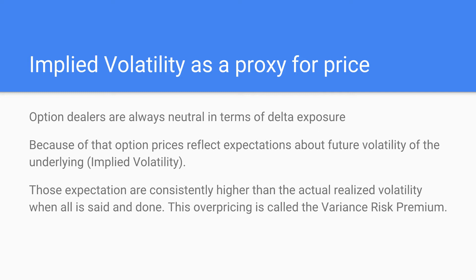Because the options are delta-neutral, the future price of the underlying is not what determines the price of an option. The determinant of the price of an option is the expectation of how volatile the underlying is going to be. The profit that an option dealer will make is going to be higher if the underlying doesn't have a lot of volatility — if the price doesn't swing much back and forth — because the higher the volatility, the more frequent the hedging has to happen.